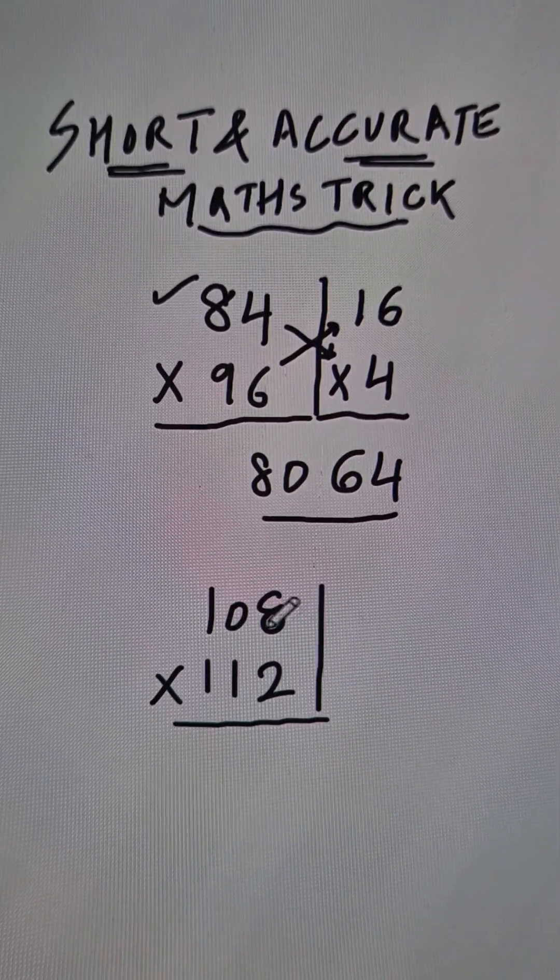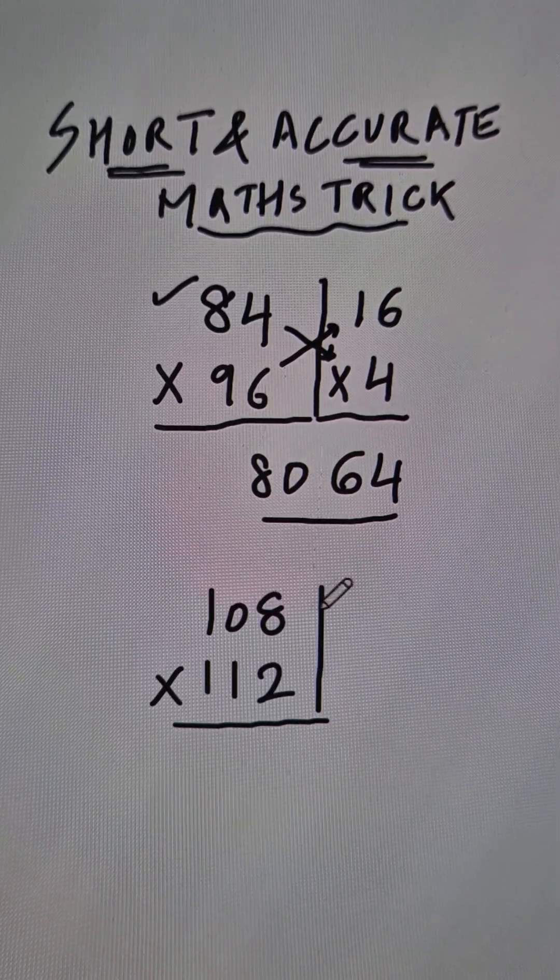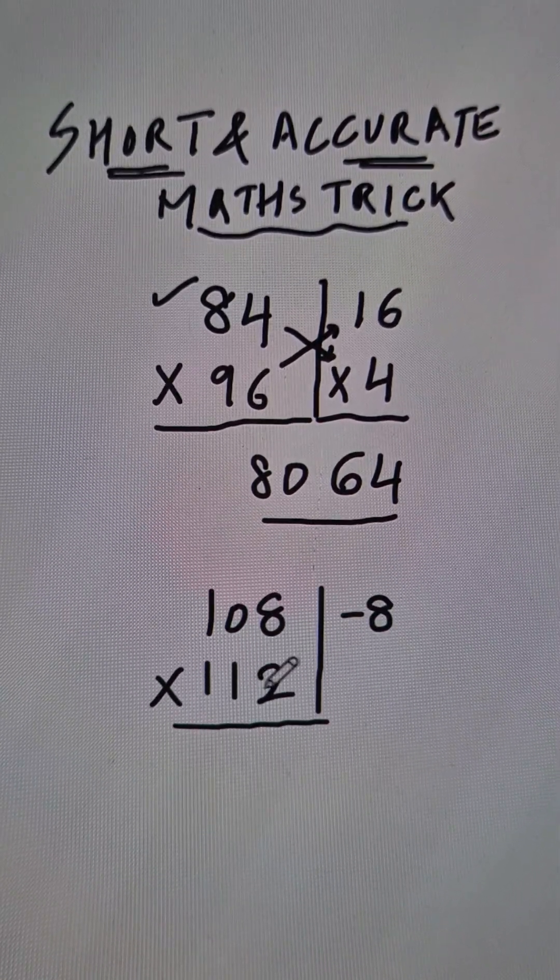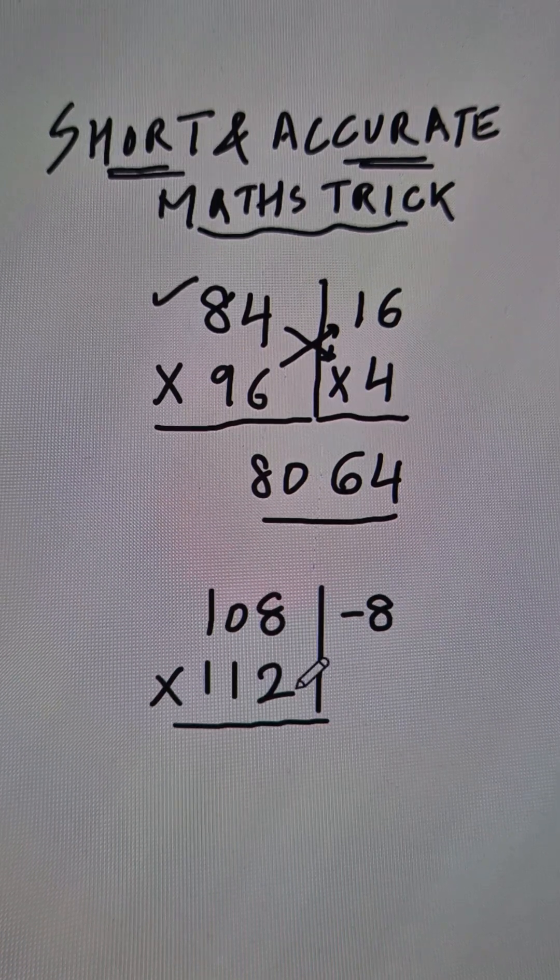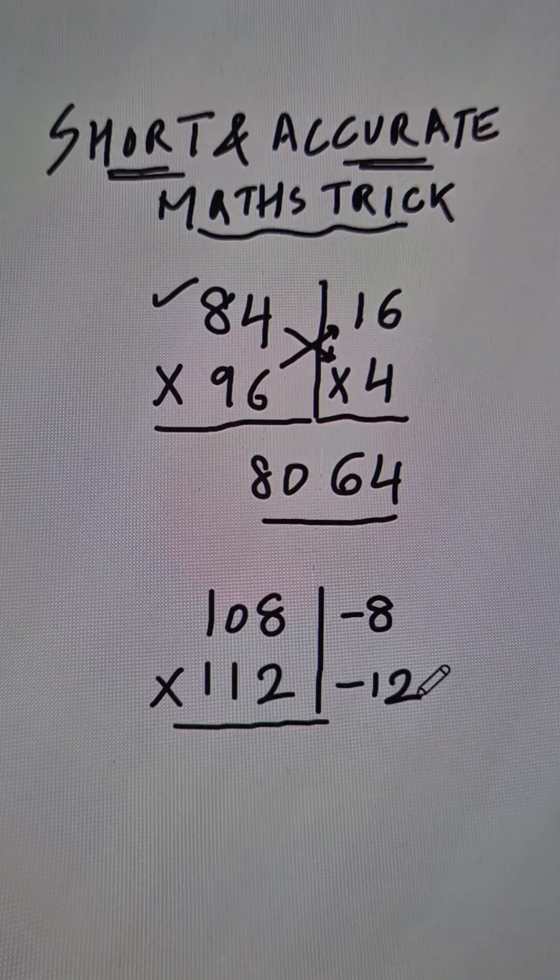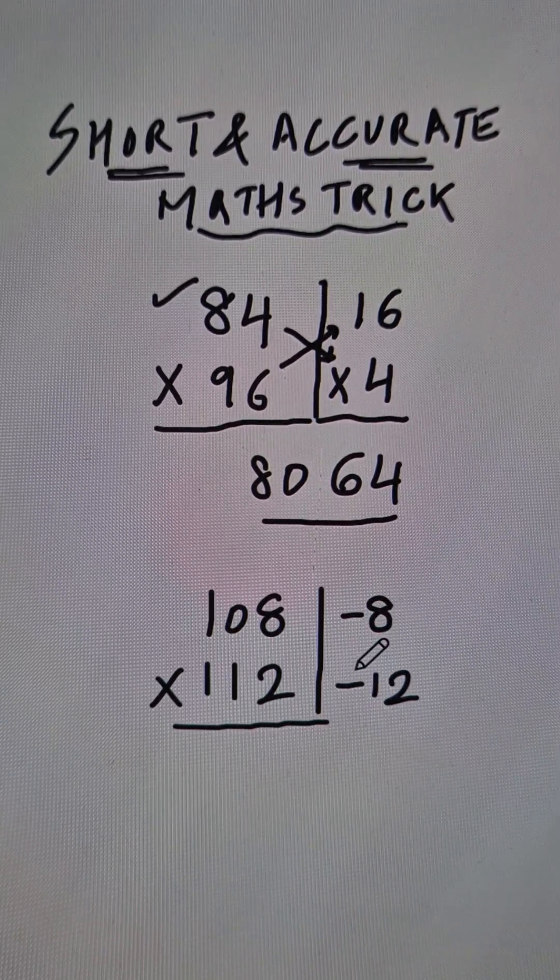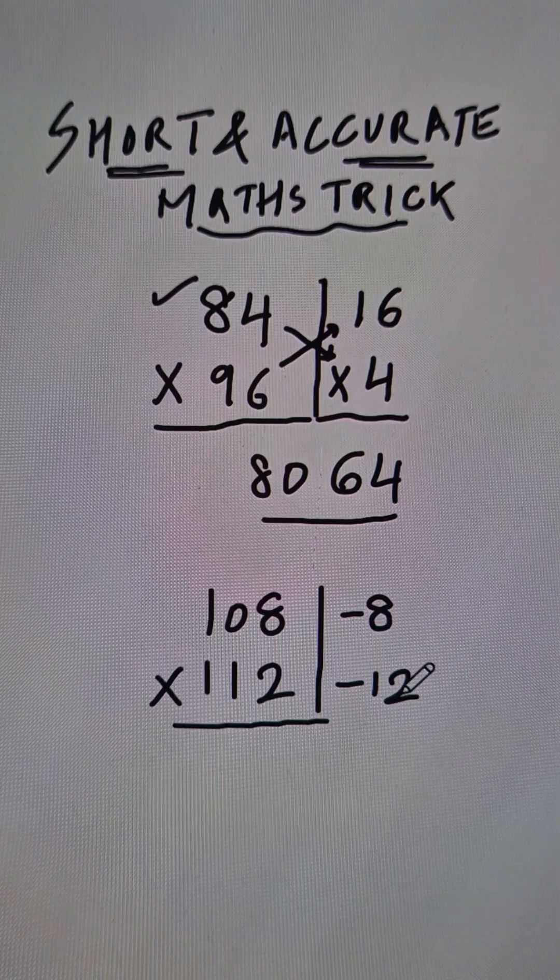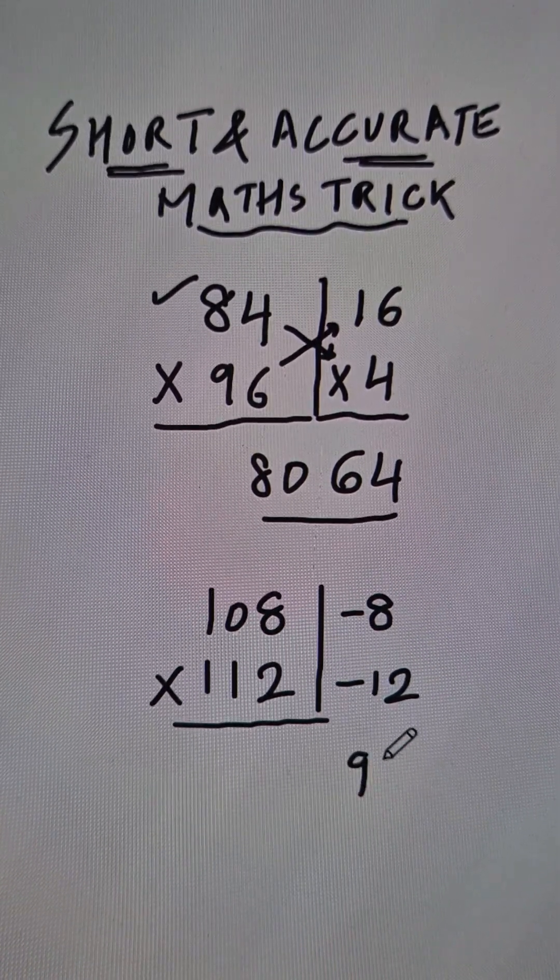Likewise, if you see these two numbers, 100 minus 108 is negative 8, and 112 when subtracted from 100 gives you negative 12. Now negative and negative when you multiply them you get a positive number. 12 8's are 96, and therefore the last two digits of your answer is 96.